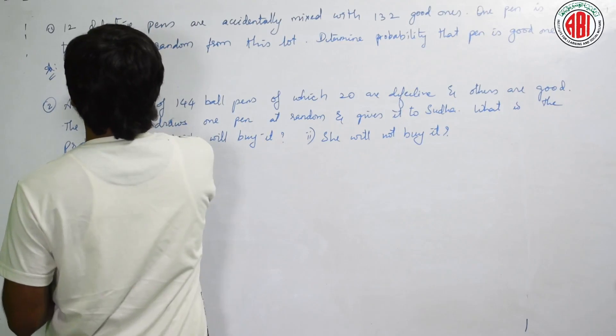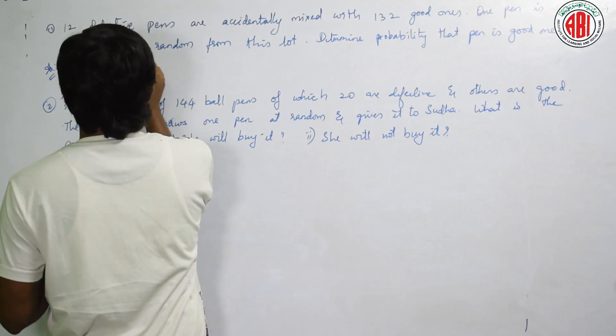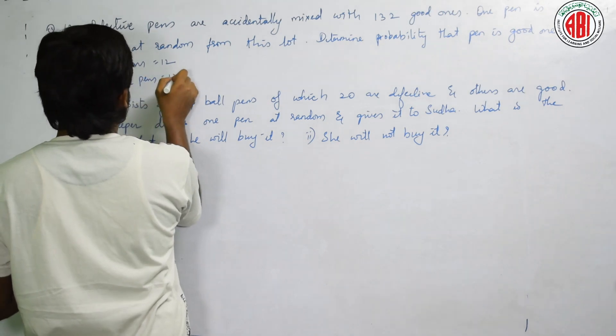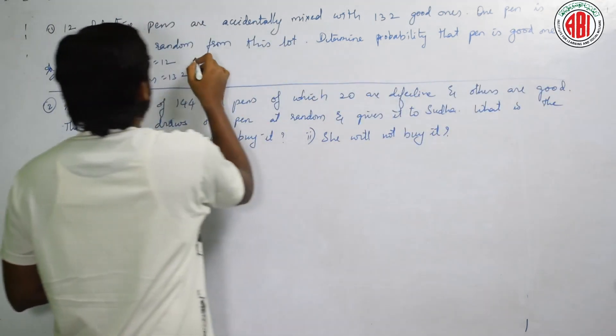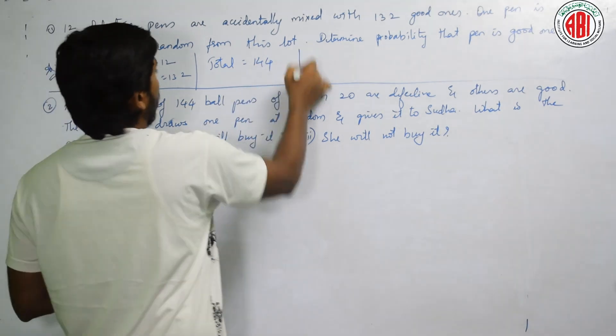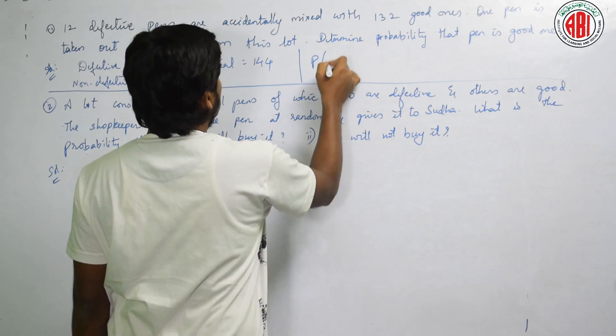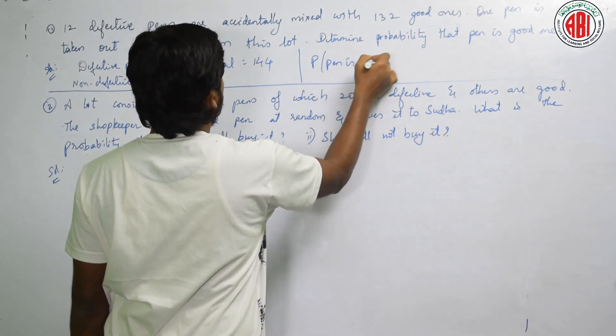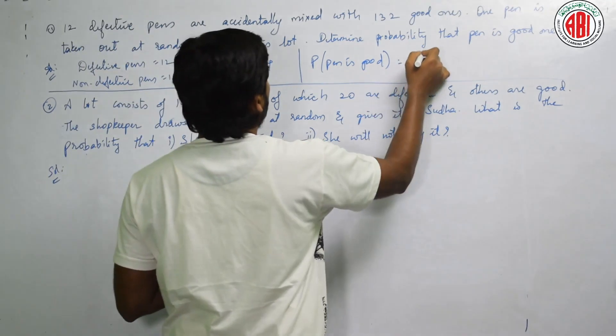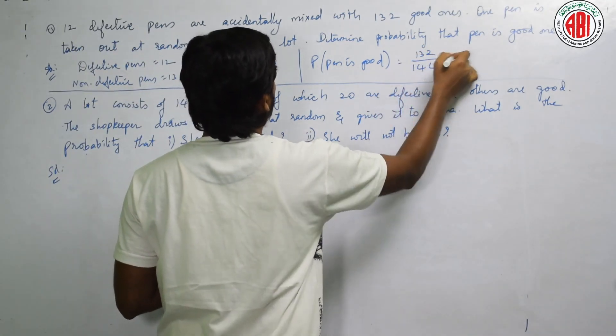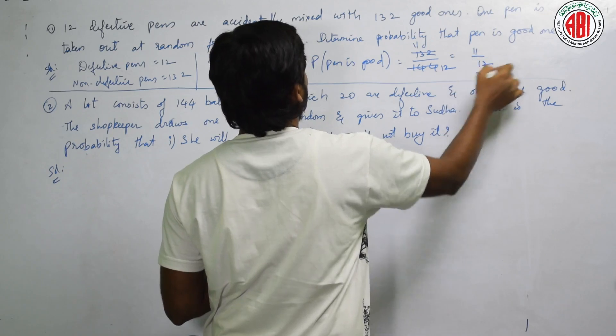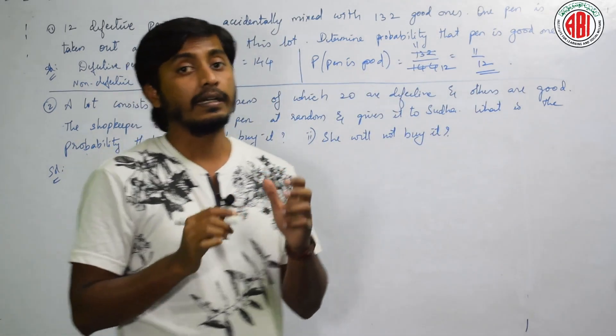How? How many defective pens are there? Defective pens are 12. Non-defective pens are 132. Totally, how many pens are there? Total 132 plus 12 is 144 pens. So what is the probability that pen is a good one? Numerator me good pens kitne? 132 out of 144. 12 elevens, answer is 11 by 12. This is the probability that pen is a good one.